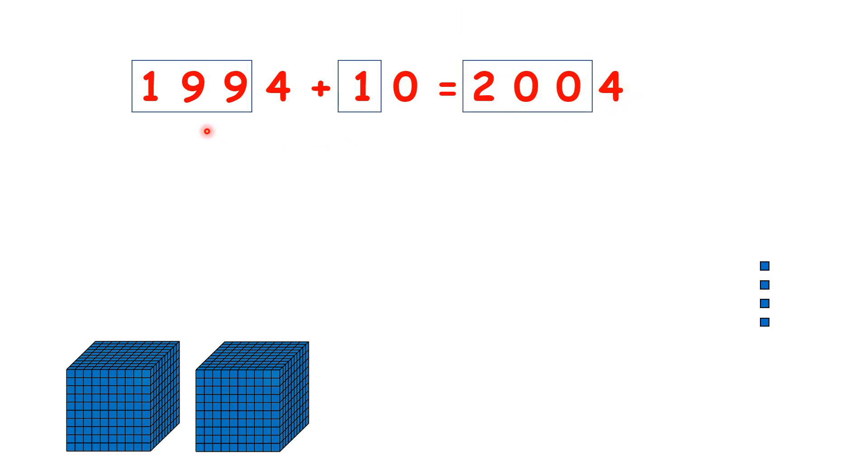So really, we had 199 tens, added 1 ten, and now we have 200 tens, because 200 tens is the same as 2,000, and of course the four units stay the same.